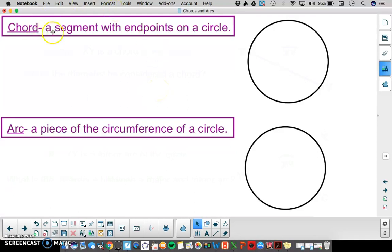A chord is a segment with endpoints on a circle. So here we have segment XY. The endpoints X and Y are on that circle. We would name that chord just as we would name any segment, segment XY. We would say segment XY is a chord of the circle.